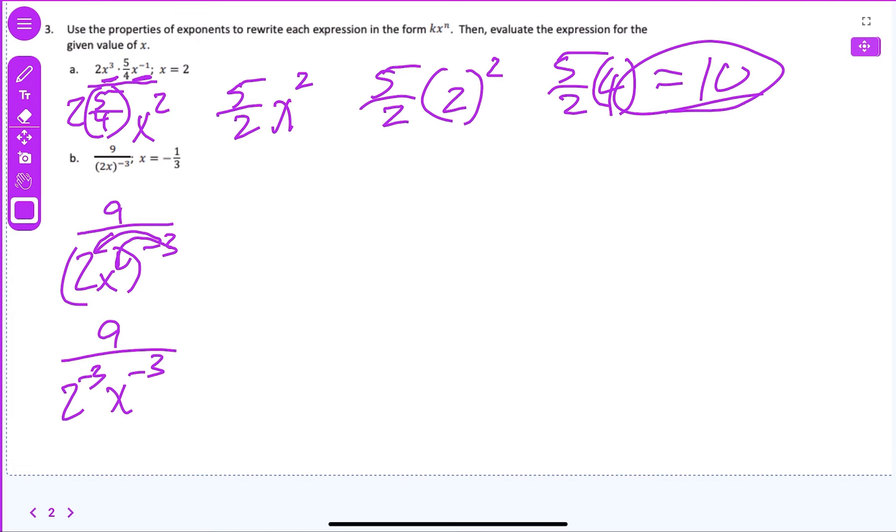Now since those are negative exponents and they're in the denominator, we can shift those to the top. So we can rewrite this as 9 times 2 to the 3rd times x to the 3rd. Well what's 2 to the 3rd power? Eight.